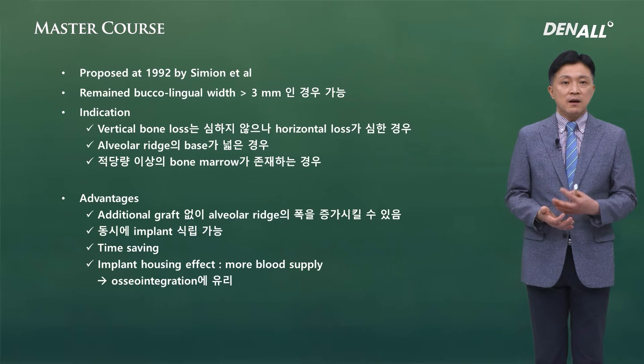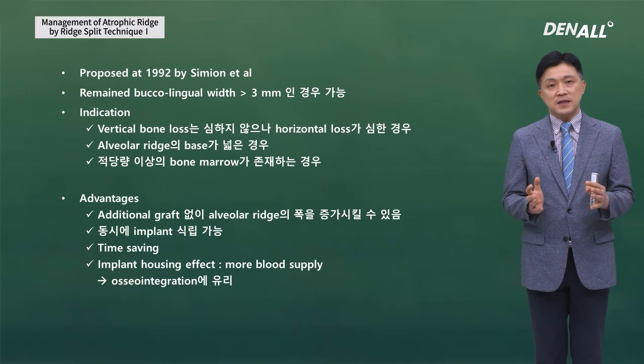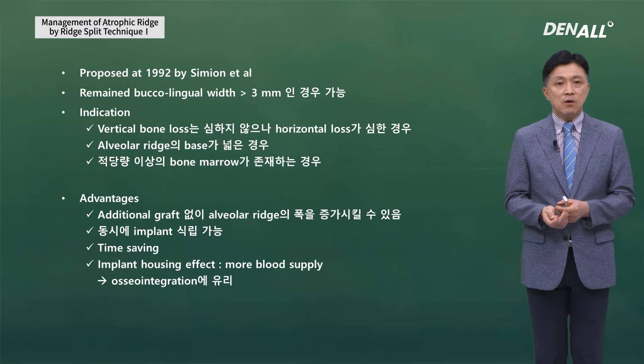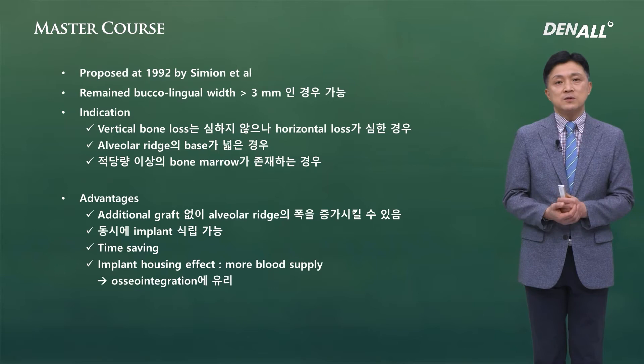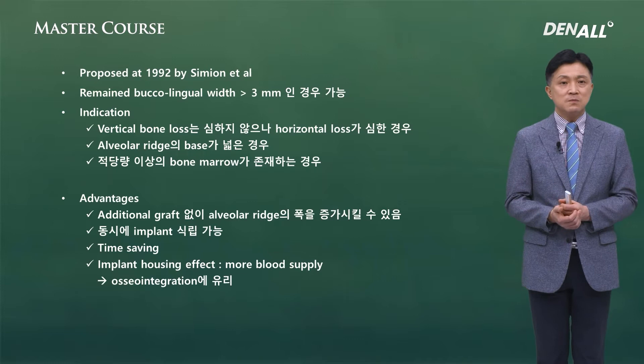For ridge split osteotomy, the remaining buccal-lingual width needs to be over 3 mm. The indications include: severe horizontal loss but not severe vertical bone loss; a wide alveolar ridge base — it should not be used if the base is narrow. A sufficient amount of bone marrow is also a very important indication. If there is too much cortical bone, it is not a good fit.